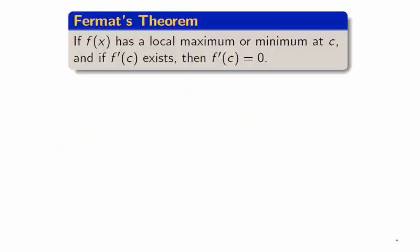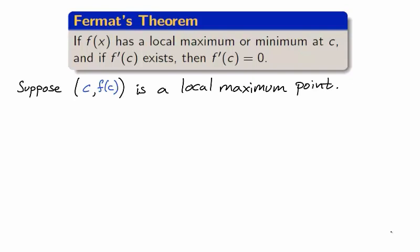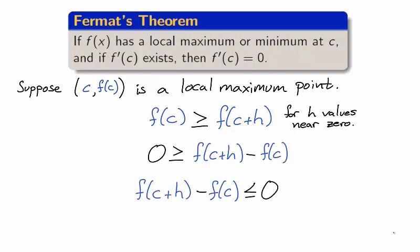Fermat's theorem says to expect local extrema to have either nonexistent derivatives or zero derivatives. Suppose the point (c, f(c)) is a local maximum and assume the derivative at c exists. As a local maximum, f(c) is larger than f(c+h) for h values near zero. With a bit of algebraic manipulation, we find that f(c+h) - f(c) is not positive.